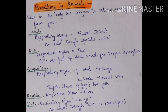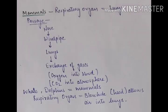Amphibian — land aur water dono pe rehta hai. Respiratory organs: lungs aur moist skin. Land pe rahega to lungs, aur water mein rahega to moist skin. Tadpole larva hota hai frog ka aur uske paas gills hote hain. Adult mein woh replace ho jaate hain. Reptiles ke paas lungs hote hain, respiratory organ. Birds ke paas bhi lungs hote hain — unki chonch ke upar do chote chote holes hote hain, unke through air enter karti hai unke lungs mein.